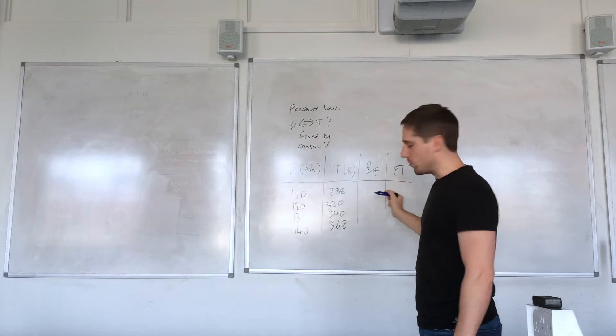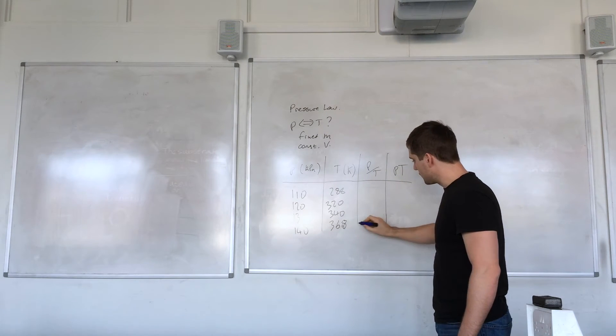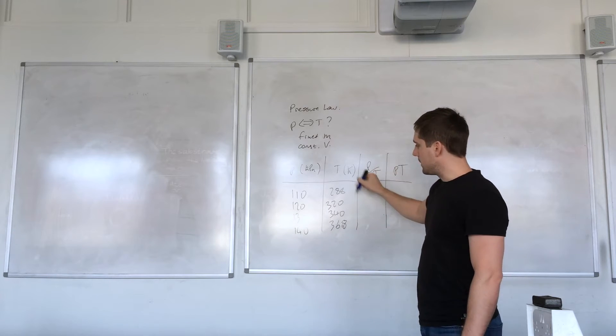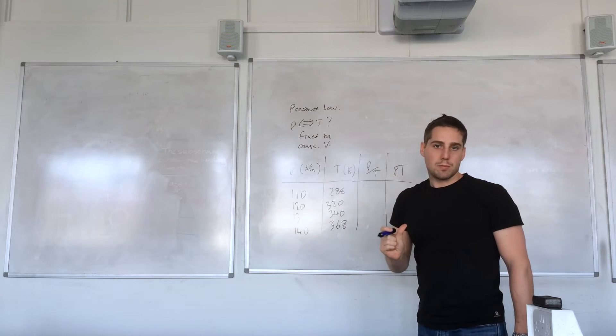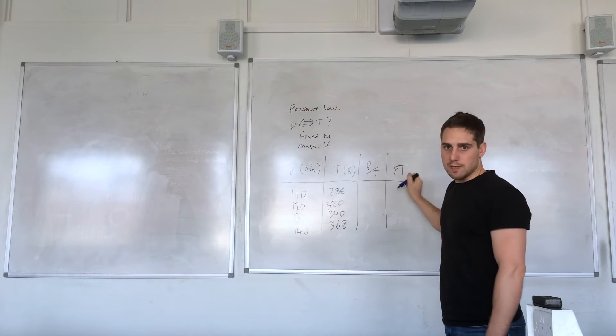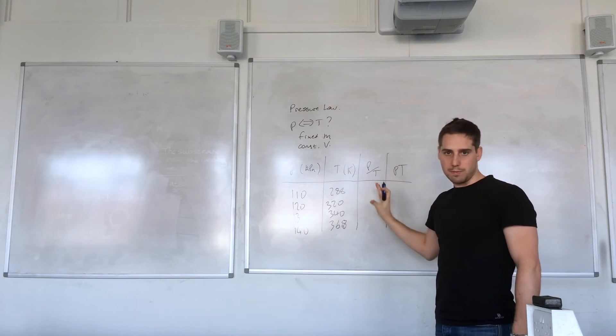We then work out what pressure divided by temperature is. If all these values are constant then pressure is directly proportional to the temperature. And if these values are constant then it's inversely proportional. It can't be both at the same time.